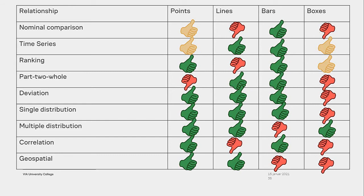So how do you know what relationship to depict? Stephen Few suggests listening to the words that business people use. For a time series, look for words such as: change, rise, increase, fluctuate, grow, decline, decrease, or trend.